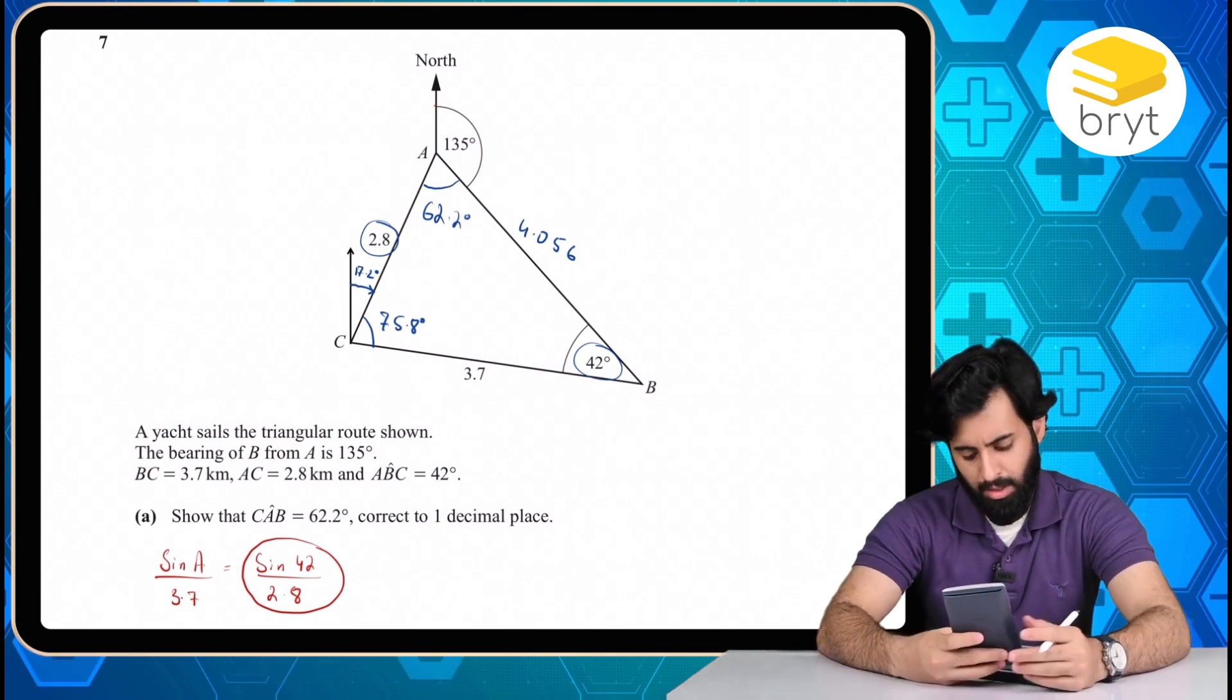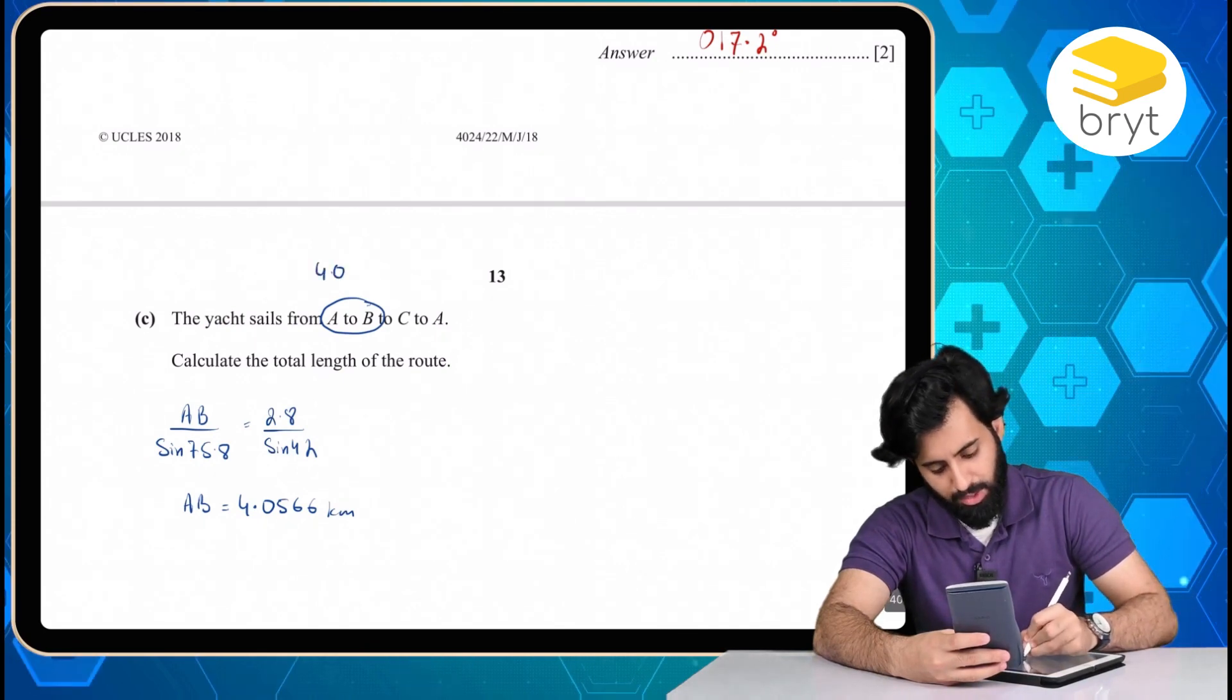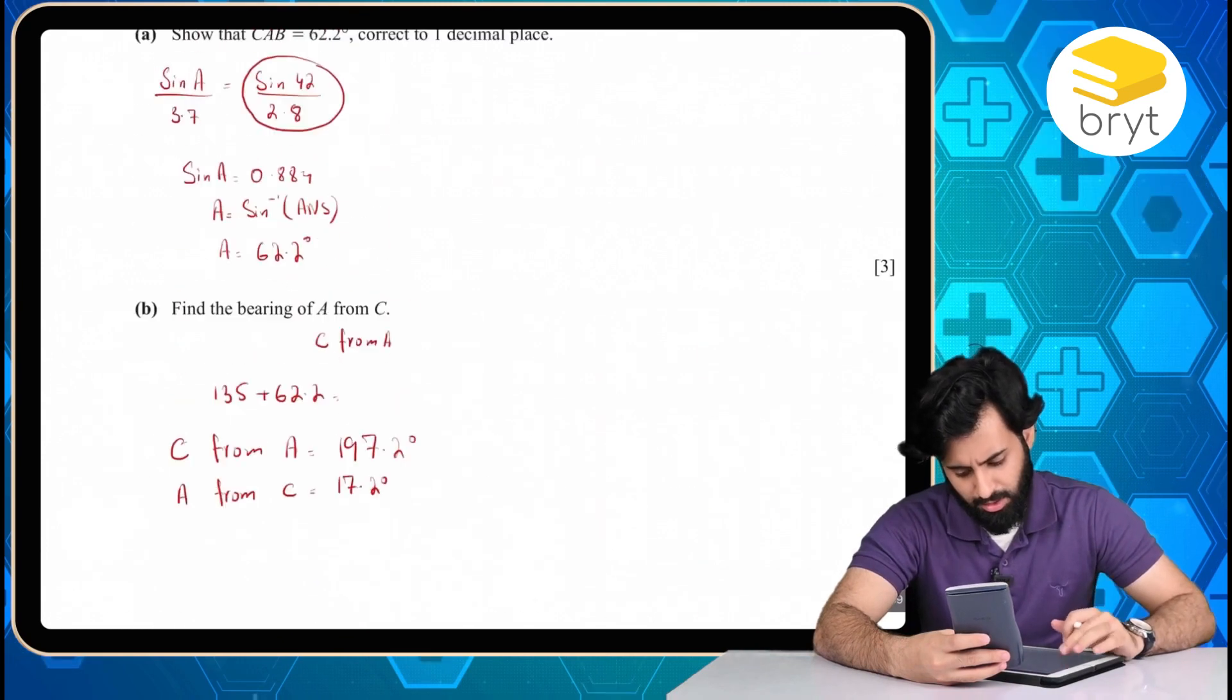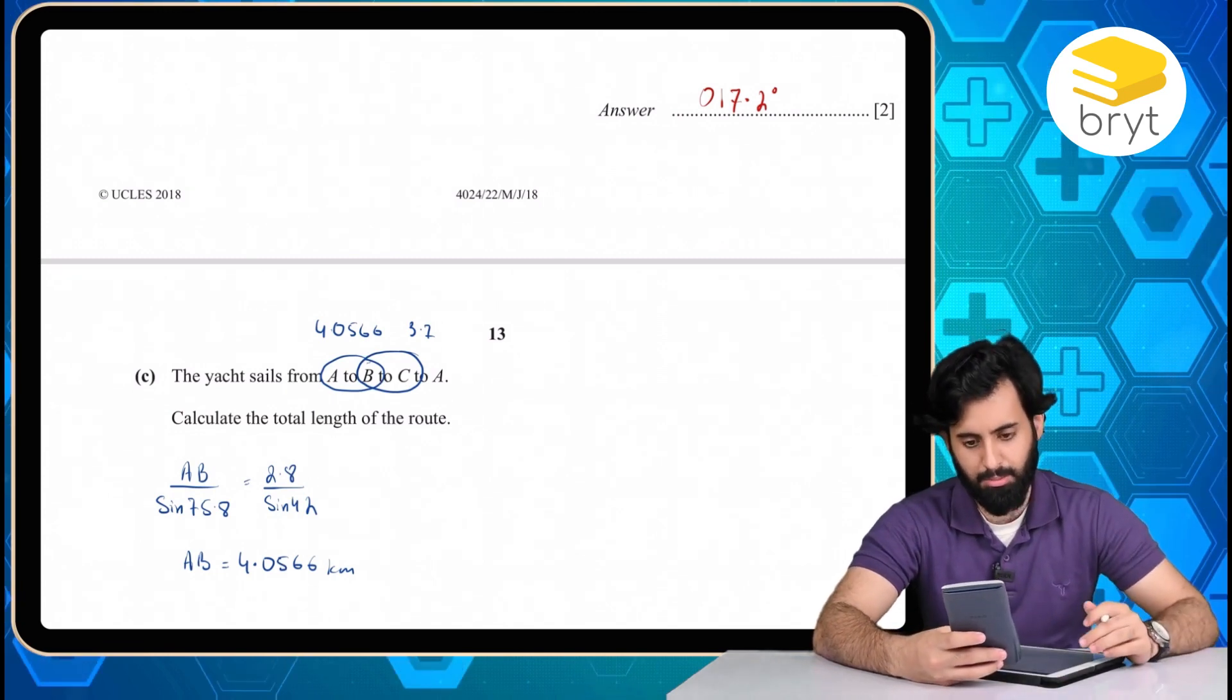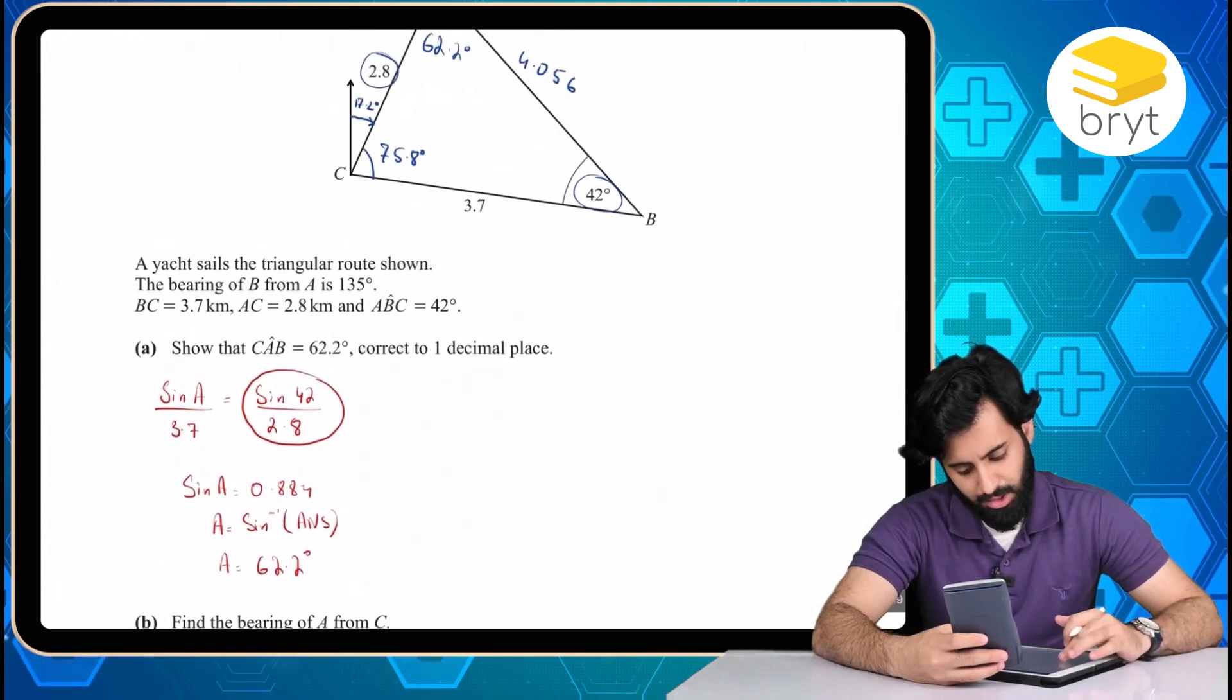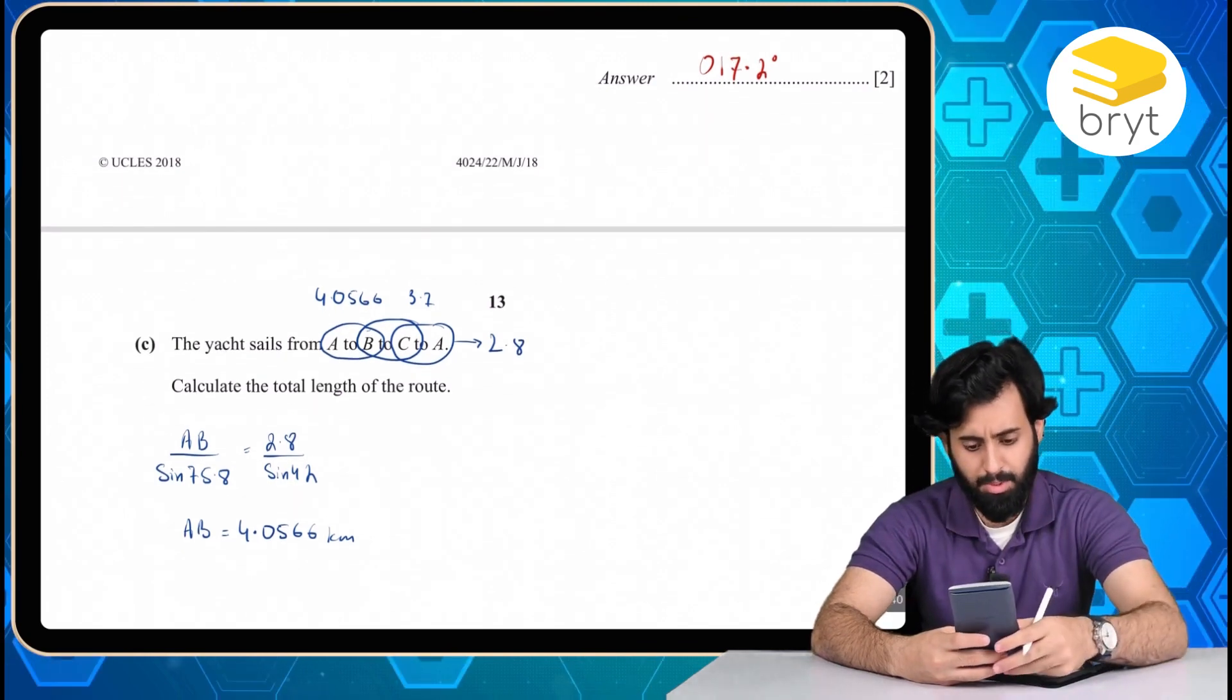Now I know it's going from A to B. So that means if it's going from A to B, so 4.0566. And then from B to C, I guess that's 3.7. Yeah, there you go. So here's 3.7. So I'm just going to add 3.7 to the value that I already have in my calculator. And then from C to A, which is 2.8. So plus 2.8. So there you go. Let me just sum this up.